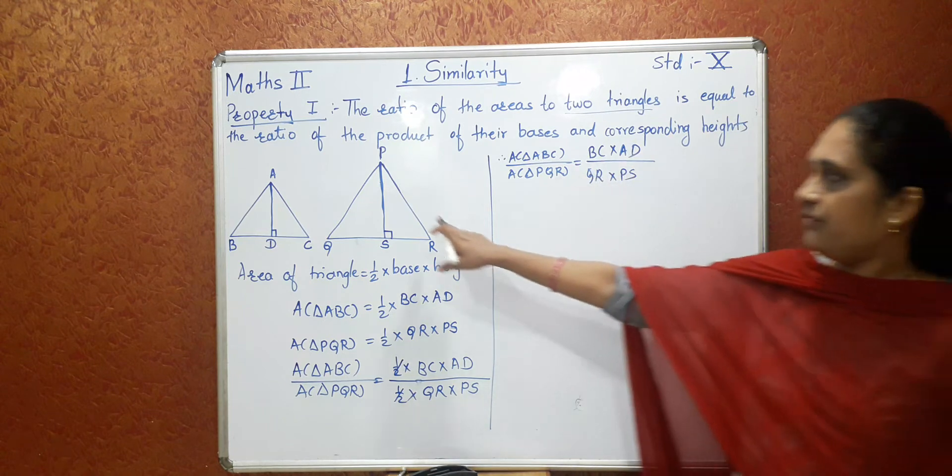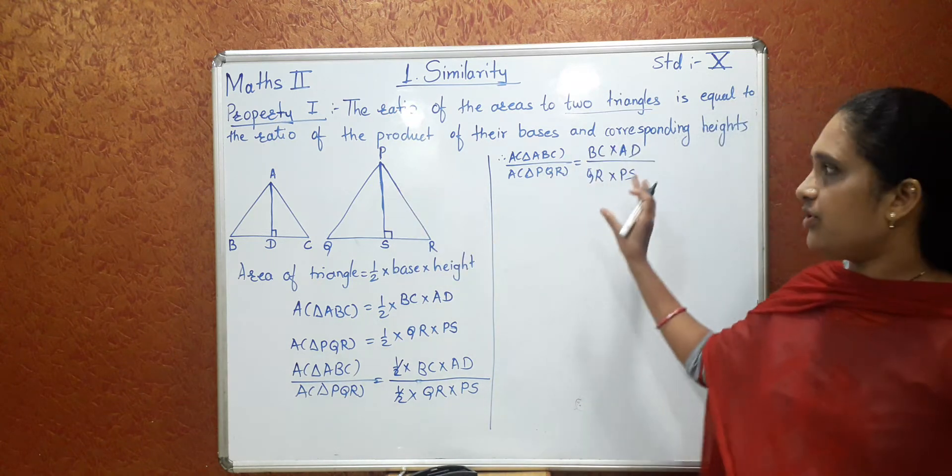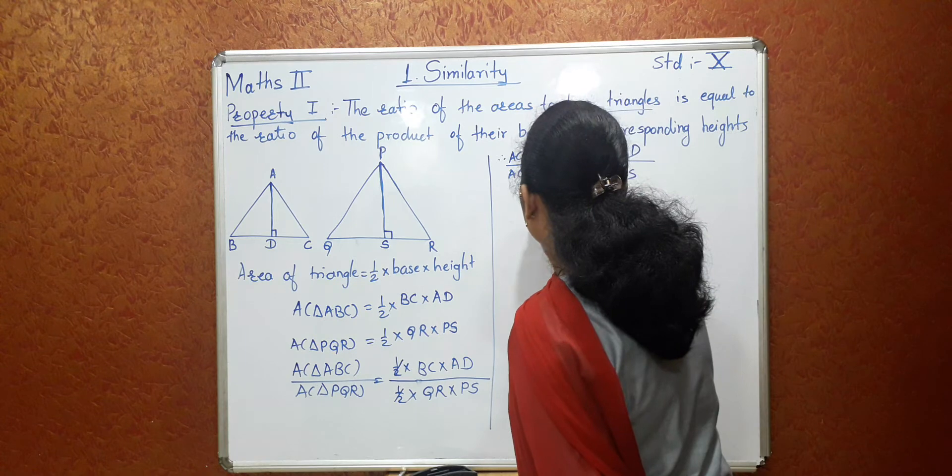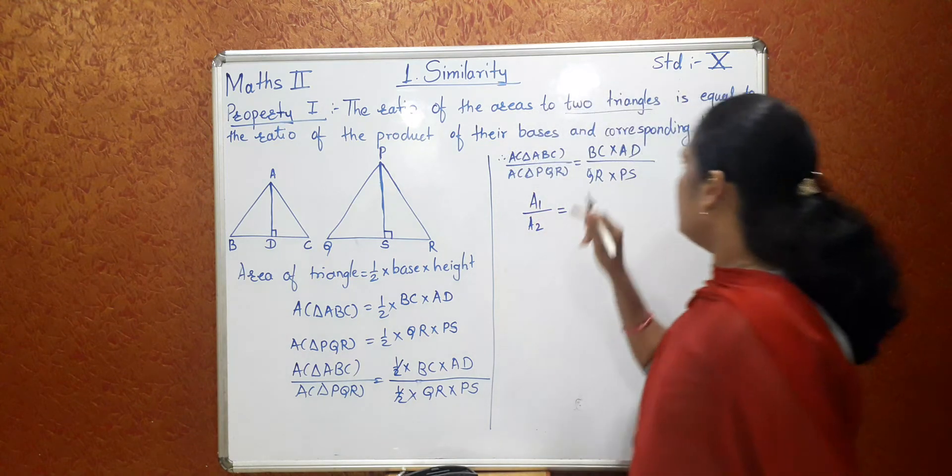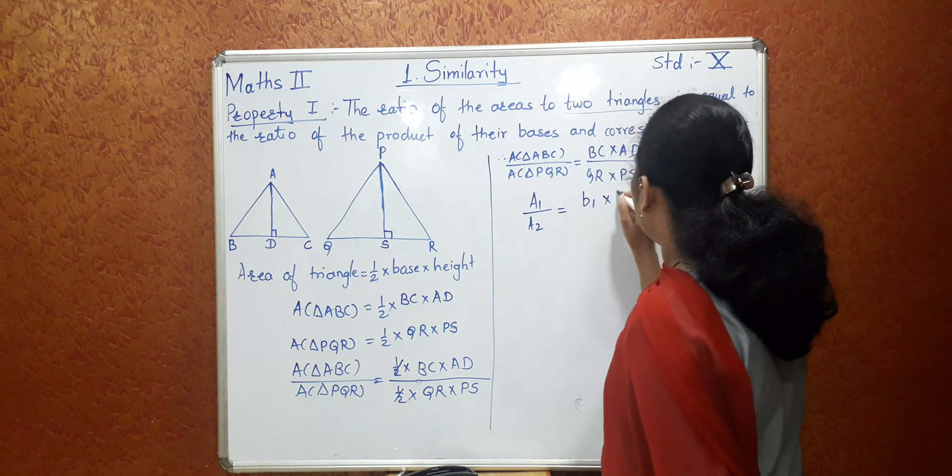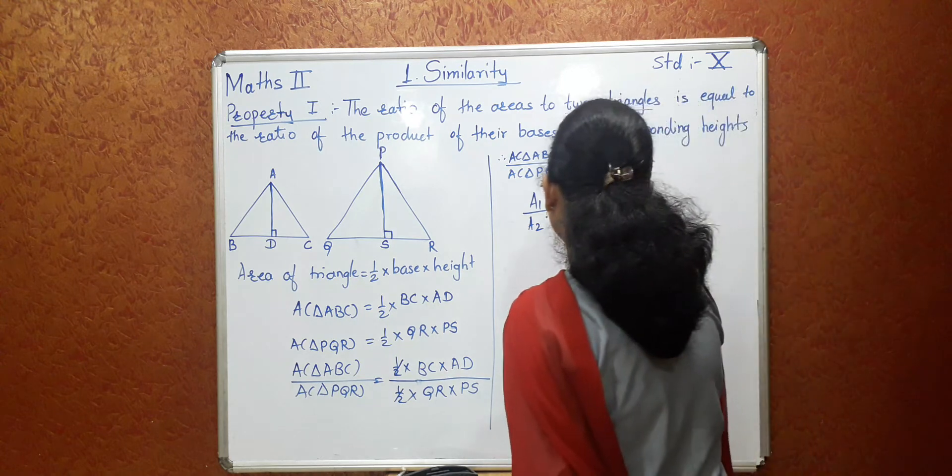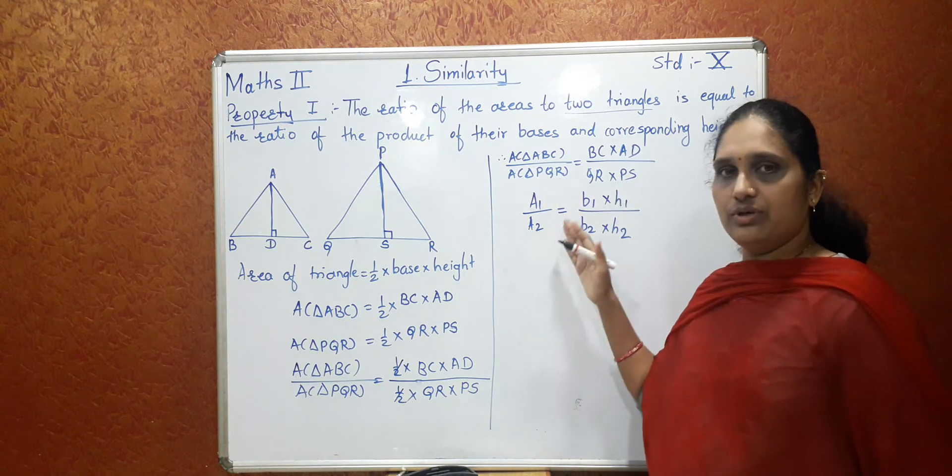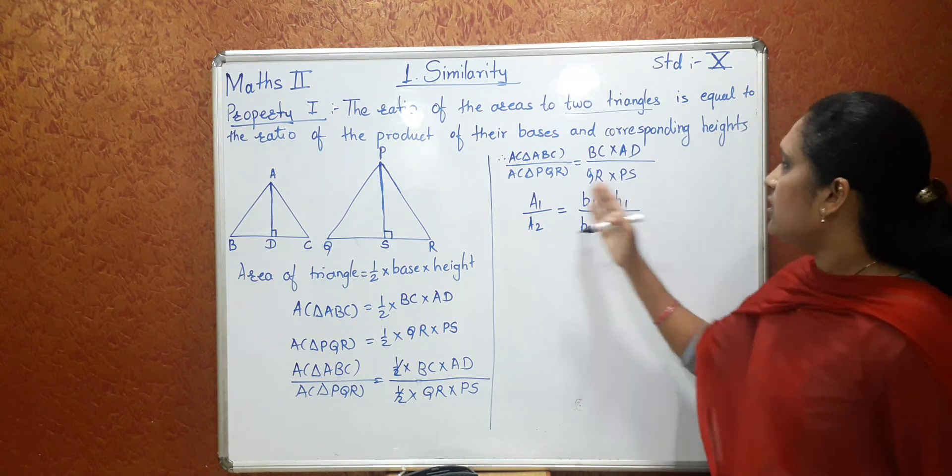Now in this figure, in our figure, this BC is nothing but the base and this is nothing but the height. So now for this I will denote the letters. This is the first area. So I will write A1 upon, this is the second area, so I will write A2 equal to, for this BC base, I will consider the letter B1, that is base 1 into H1, height 1, whole upon, this is B2 into H2. So this way, it is easy to remember, A1 upon A2 equal to B1 into H1 upon B2 into H2. So this is the first property.